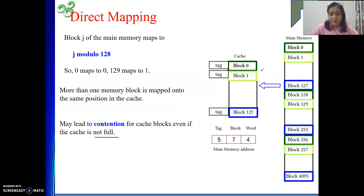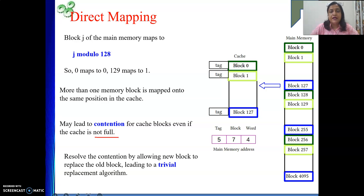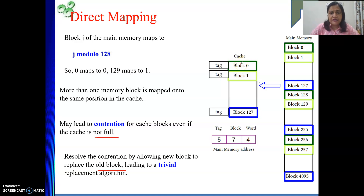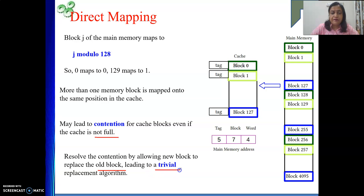The solution to contention is replacement: allowing the new block to replace the old block. So block 0 will go back to main memory and block 256 will come in at that position. Whenever bringing a new block into the cache, the decision of whom to replace is already fixed - because block 256 will go to block position 0 only. Whoever is sitting at block 0 will be replaced, leading to a trivial replacement algorithm.